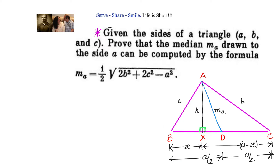We have been given a triangle ABC. BC is lowercase a, AB is small c, and AC is small b. We need to find out the length of the median drawn from vertex A onto BC, the side with length a.